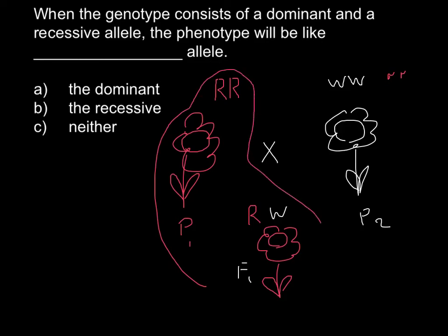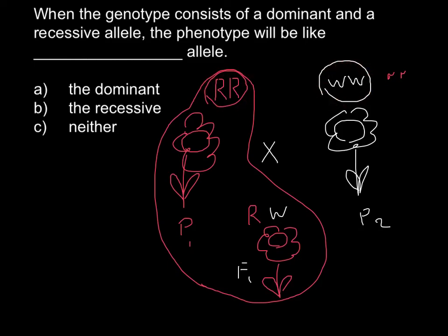And now we can answer this question. We have two parents: one that is homozygous for the red color and homozygous recessive for the white color. So here we had homozygous dominant, here homozygous recessive, and here we have heterozygous. But phenotypically it's going to be like parent 1. So our correct answer is A.